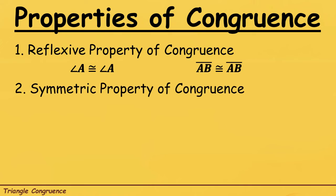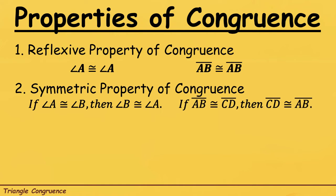Second property: we have the symmetric property of congruence. From the word symmetric. Let's have an example. Number one: if angle A is congruent to angle B, then angle B is congruent to angle A. And that's true. So not only for the angles, but also with the line segment or the sides: if line segment AB is congruent to line segment CD, then CD is congruent to line segment AB.